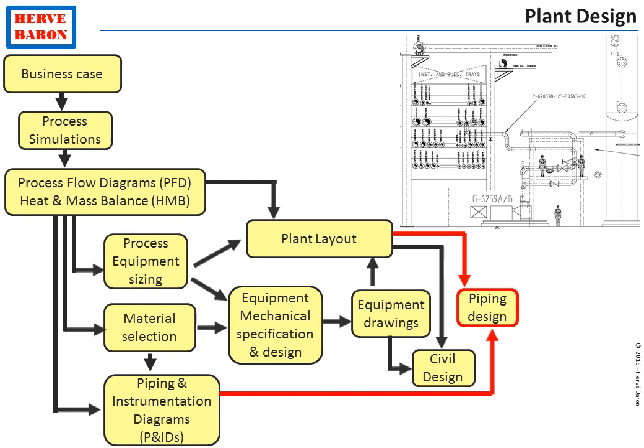The piping design entails the definition of a pipe routing that meets a number of requirements, including accessibility for the operator to operate the valves and to have access to instrumentation on the pipes. It also involves calculations of lines subject to thermal expansion. Such calculations determine the requirement for expansion loops, and these expansion loops give rise to additional steel structures.